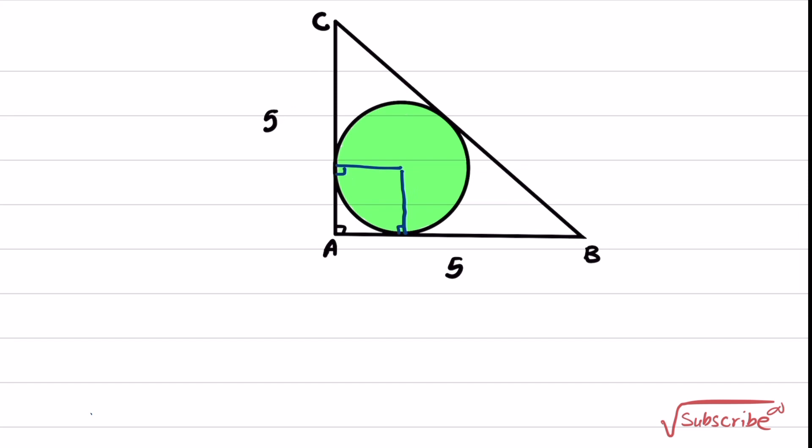And this is r, this is r, these are right angles. And this one is also a right angle. Therefore, we have a square in this region. And because it's a square, all of them are equal to r. So the sides are equal.